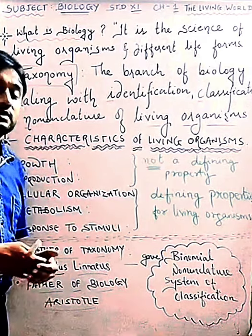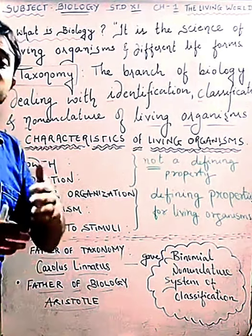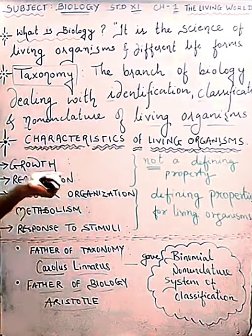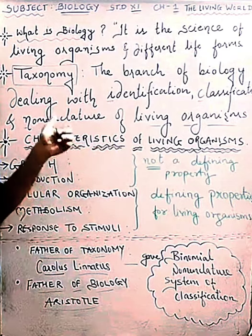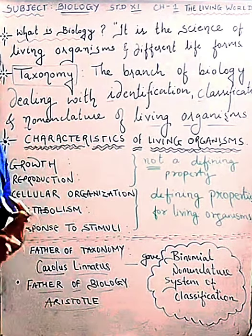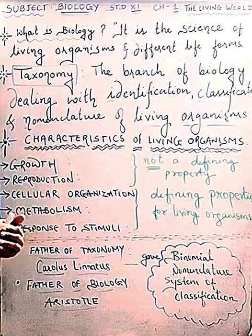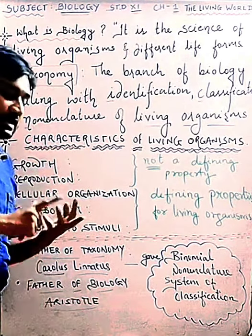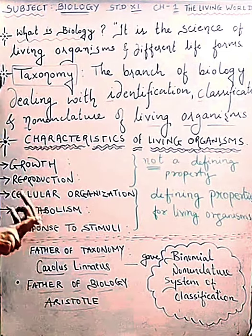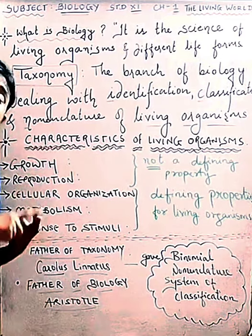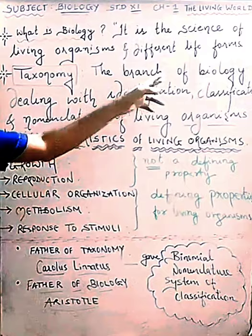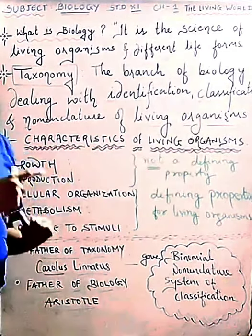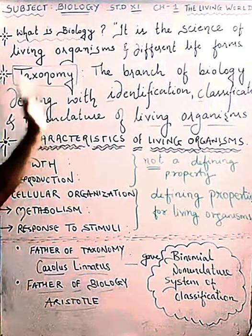Now the question arises: what is a living organism, and how can we differentiate living organisms from non-living organisms? Before we go to that topic, let's discuss a new terminology — taxonomy. Taxonomy is the branch of biology dealing with identification, nomenclature, and classification of living organisms.